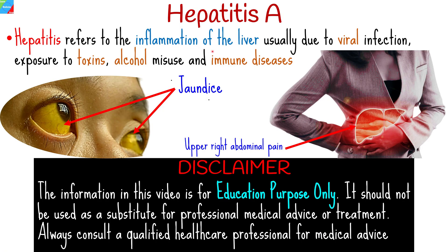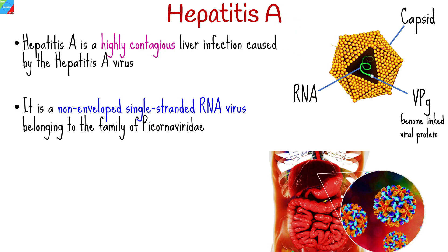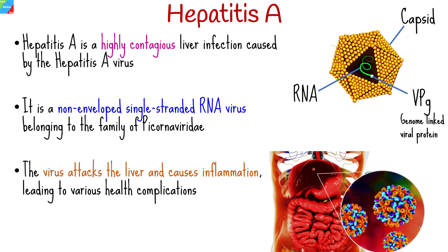Hepatitis refers to the inflammation of the liver, usually due to viral infections but sometimes due to exposure to toxins, alcohol misuse, and immune diseases. In this video, we'll dive deep into understanding hepatitis A, and this will be the first of a series of videos about hepatitis. Hepatitis A is a highly contagious liver infection caused by the hepatitis A virus, which is a non-enveloped single-stranded RNA virus belonging to the family Picornaviridae. The virus attacks the liver and causes inflammation, leading to various health complications.